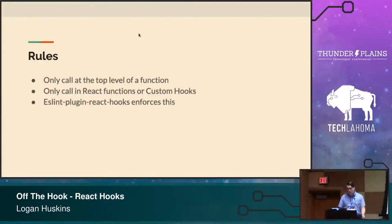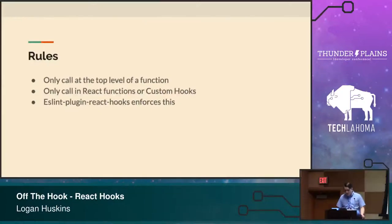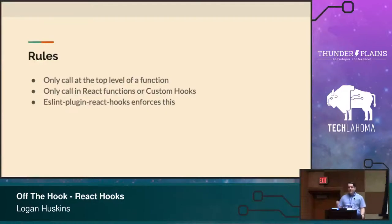There are a couple of rules around hooks. You can only call hooks at the top level of a function — you can't call hooks inside of loops or inside of conditionals. The reason is React needs these hooks to be in the same order every time. If you're using multiple useStates, the only way React knows which thing to return from which useState is the order they're called. You can only call hooks in React functions or custom hooks. There's also an ESLint plugin called eslint-plugin-react-hooks that enforces these rules — if you're using ESLint and React hooks, please use this.